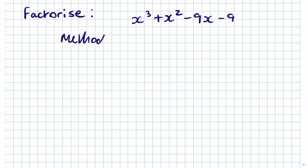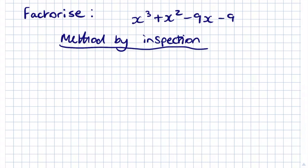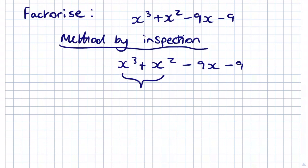So if we first look at the method by inspection, what we need to do is find a common factor between each of the terms. If we look at x³ plus x², we can see that we can factorise both of these terms by x², giving us x² multiplied by (x + 1). So our common factor in this bracket is x + 1.